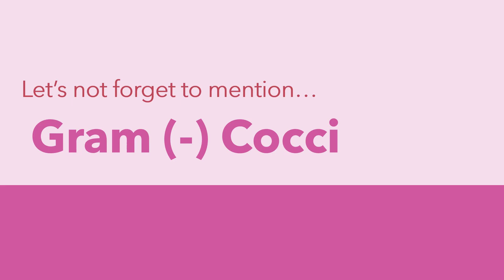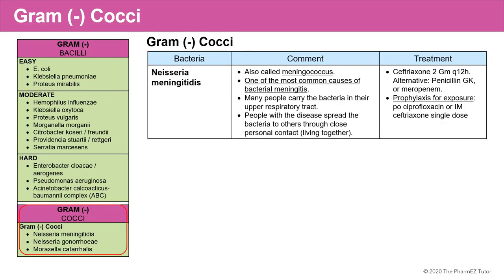Let's not forget to mention the gram-negative cocci, which are also very important bacteria to discuss. The first is Neisseria meningitidis, also called meningococcus. It's one of the most common causes of bacterial meningitis, and many people carry the bacteria in their upper respiratory tract. The treatment of an active case is ceftriaxone 2 grams every 12 hours. Alternatively, penicillin G or meropenem can be used. For prophylaxis for exposure, use oral ciprofloxacin or IM ceftriaxone for close personal contacts of the patient.